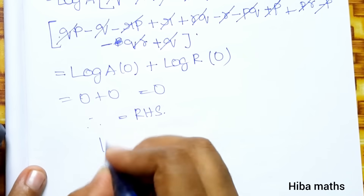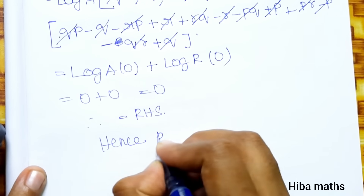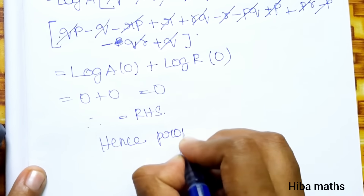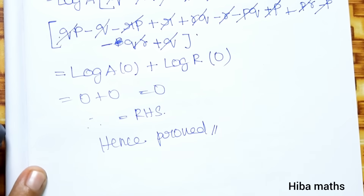0 into anything is 0, so 0 plus 0 equals 0. Therefore LHS is equal to RHS. Hence proved. Thank you so much for watching.